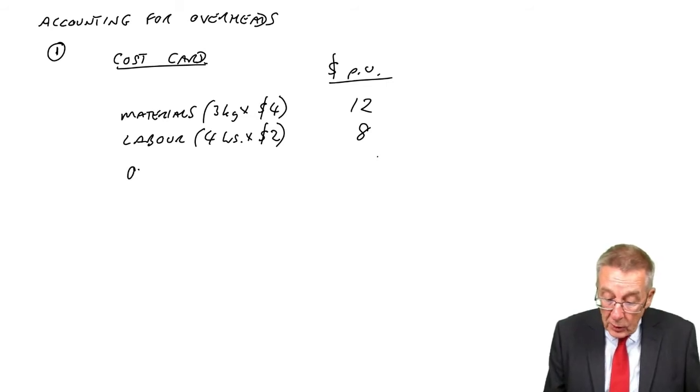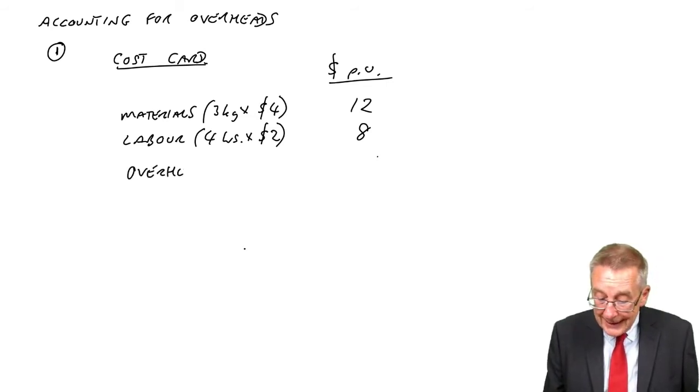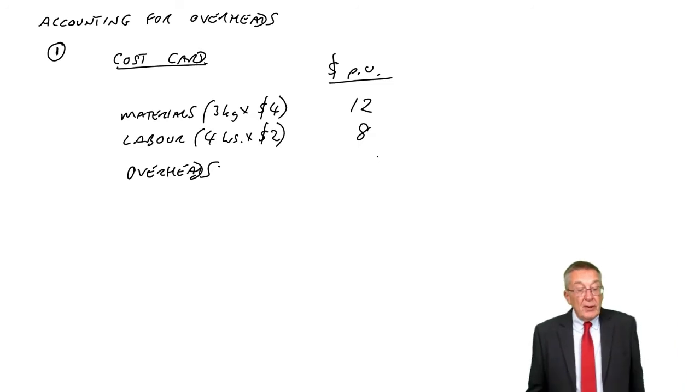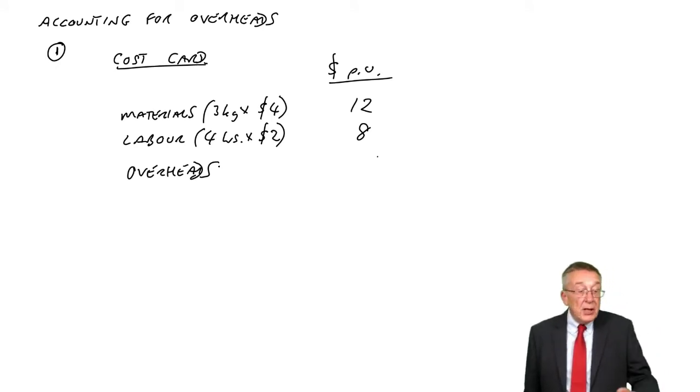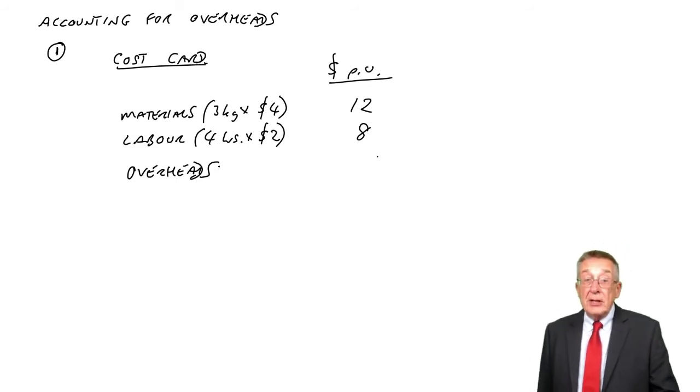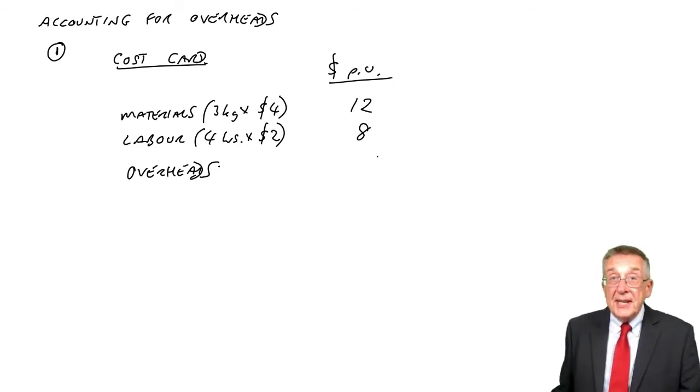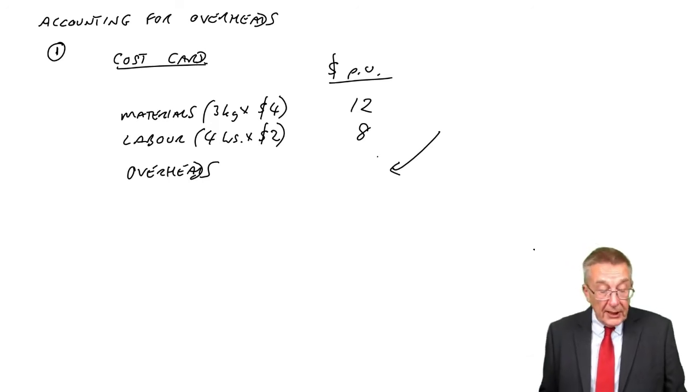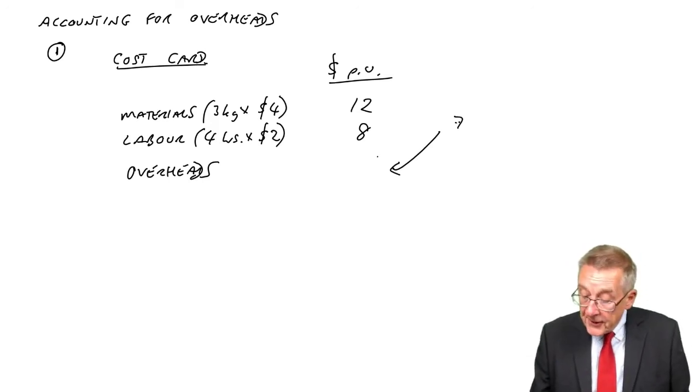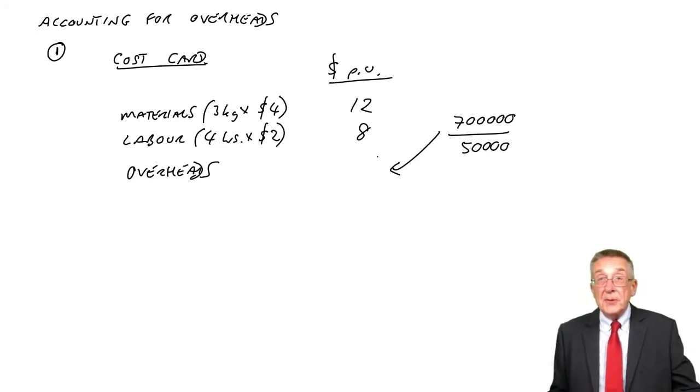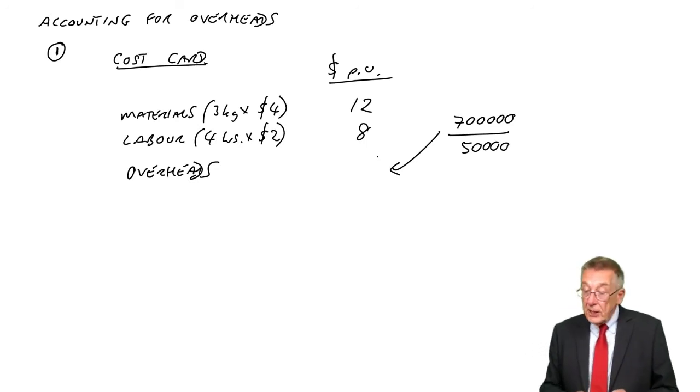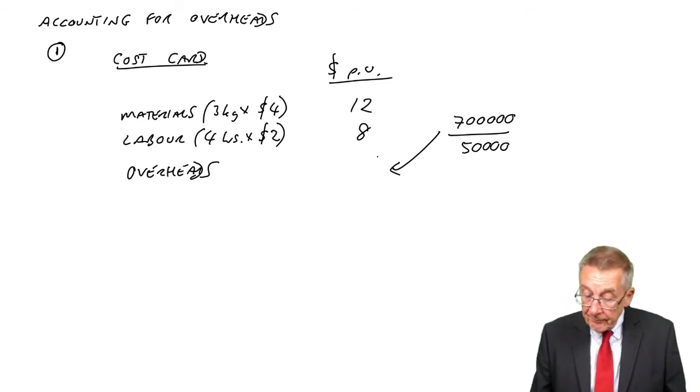In addition, though, we've got our overheads. We've got fixed cost of production, $700,000 per year. How are we going to get a cost per unit? We expect to spend $700,000, we expect to produce 50,000 desks. So how much is each desk going to cost us? $700,000 in total, divide by the 50,000 desks we're going to produce, and that gives us an overhead cost per desk of $14.